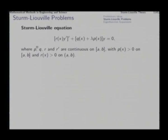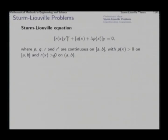This equation, which is a bigger version of the previous one, is called the Sturm-Liouville equation, in which the functions P, Q, R etcetera have certain properties. P, Q, R and R prime all need to be continuous over the closed interval [a, b]; P(x) must be positive definite on [a, b]; and R(x) is also positive definite on this interval.